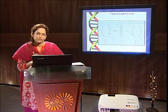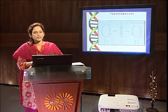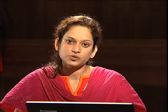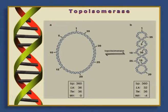Topoisomerases. The linking number is constant and fixed for a given supercoiled DNA. The linking number can only be changed by enzymes known as topoisomerases. Topoisomerases cut one or both polynucleotide strands, thereby changing the linking number. For example, in the presence of topoisomerase, the linking number changes from 36 to 32. Topoisomerases play a very important role in cells and are utilized for every physiological function: DNA repair, DNA replication, and DNA transcription.